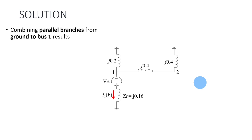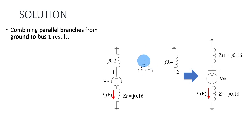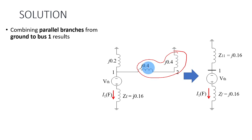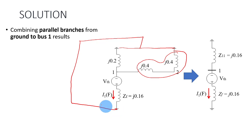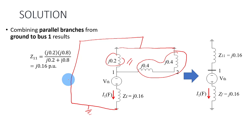You further simplify the network to find the Thevenin equivalent network. From here, you can see that you can combine all three together into one impedance. J0.4 here is now in series with this equivalent impedance, and these two together — because you can combine the common ground — J0.2 here is in parallel with these two together. If you parallel them, the equivalent impedance Z11, which is basically the Z-Thevenin, is j0.16 per unit. Z11 is the Z-Thevenin. The Z-Thevenin is 0.16.